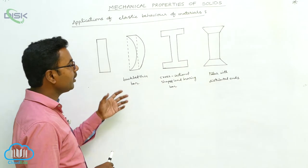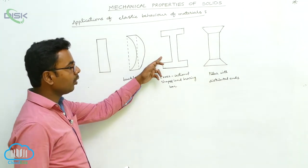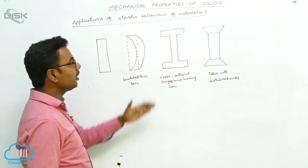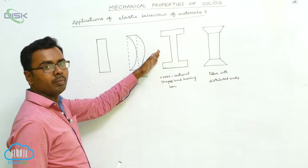We take the pillar in the shape of a cross-sectional shaped load-bearing bar. This is a cross-sectional shaped load-bearing bar. It supports more load and it cannot be buckled.